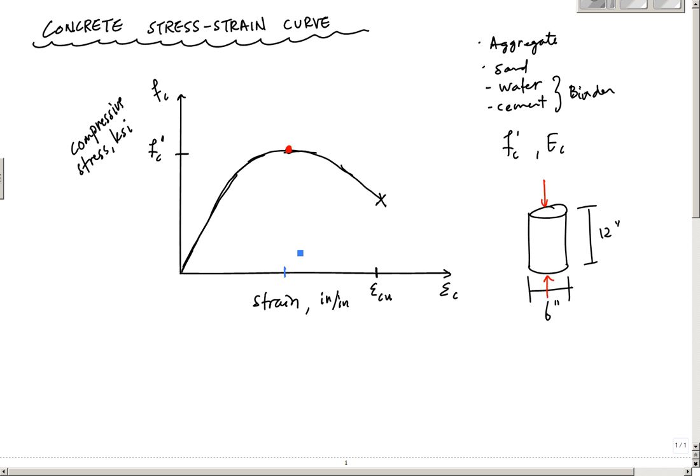For most concretes, this strain right here where this occurs is 0.002 strain. This rupture strain can range from 0.003 to 0.004 strain, this rupture strain right here, this epsilon C U, where this thing breaks. That's an important property.